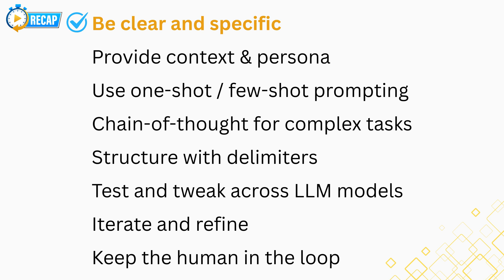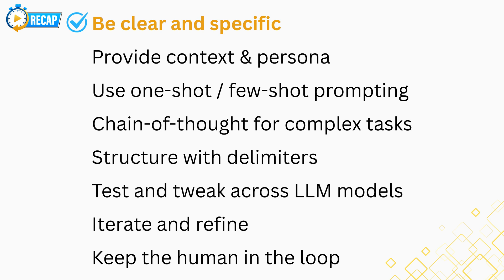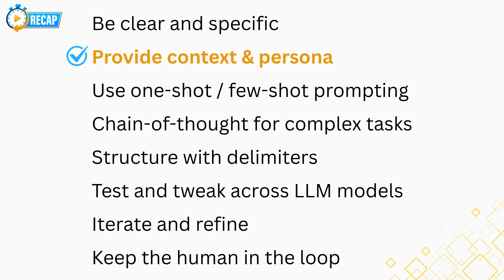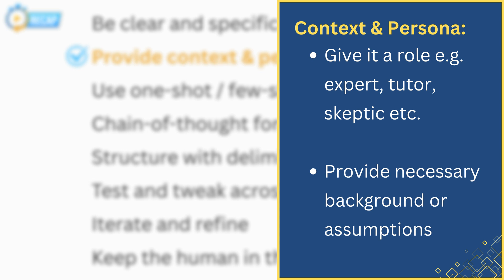Let's summarize the top takeaways for advanced prompt engineering — think of this as your cheat sheet. First, be clear and specific: specify exactly what you want, including format, tone, and length. Second, provide context and persona: frame the task for the AI — if you want it to act a certain way, such as expert, tutor, or skeptic, include that. Give any necessary background info or assumptions. Don't assume the AI knows the context; set the scene for it as you would for a student new to the topic.